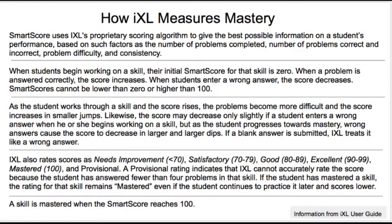Some things you should know about how iXL measures your mastery: it uses a SMART score, which looks at factors like the number of problems completed, the number of problems correct and incorrect, the problem difficulty, and your consistency in solving problems. When you begin working, your initial SMART score is zero. When a problem is answered correctly, it increases the score. When you enter a wrong answer, the score decreases. As you work through a skill and the score rises, the problems become more difficult and the score increases in smaller jumps.